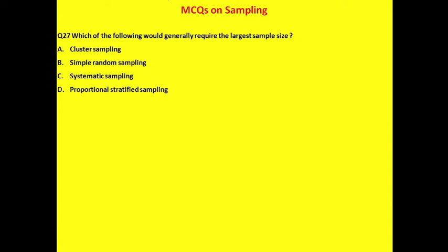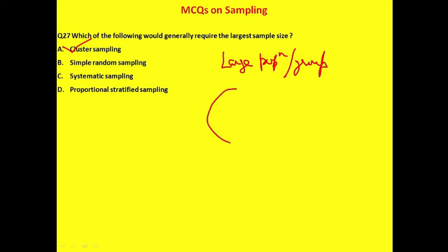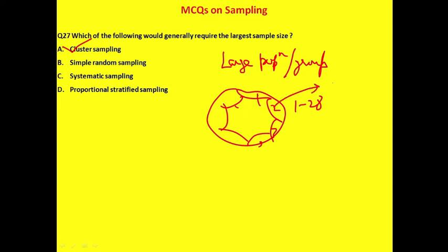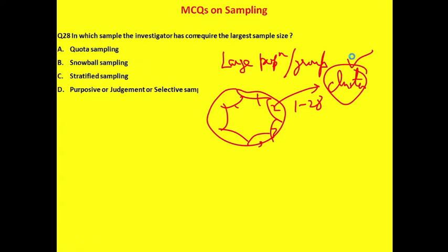Sample value is called a statistic, as discussed. Question on which sampling would generally require the largest sample size: cluster sampling, because it is used when the population or groups are large — large heterogeneous groups such as India's many states. The correct answer is cluster sampling.